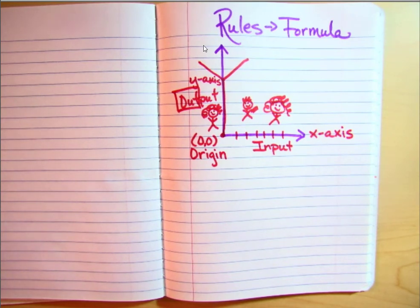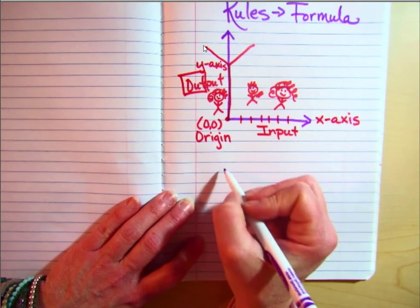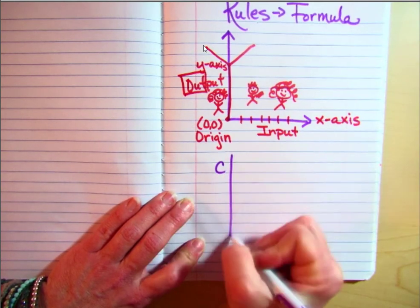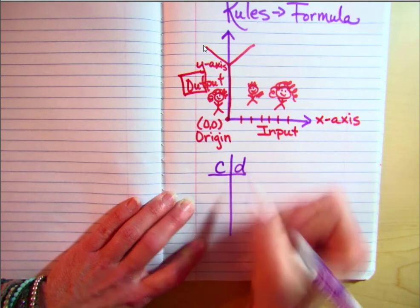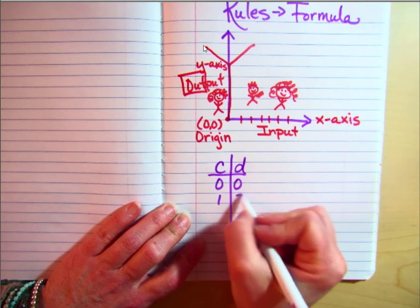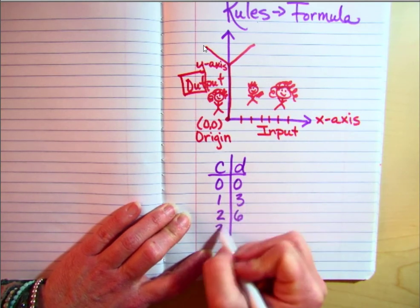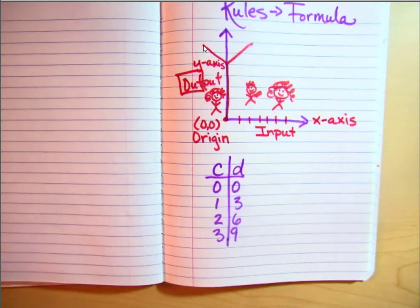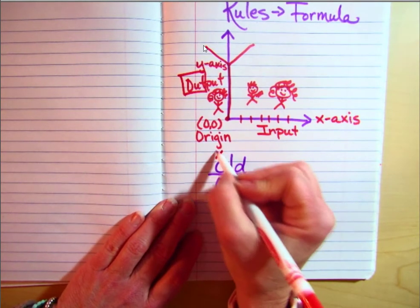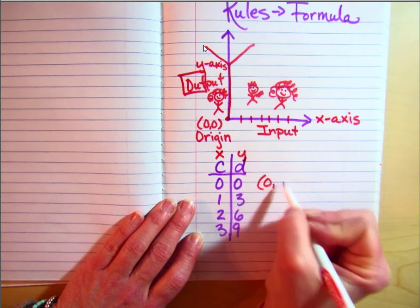Sometimes you're going to get a graph that's going to give you the points. Let's say we have one like this. It says C and D and it has these points here. When I'm evaluating these input-output tables, sometimes they change up the letters, but this is always x and this is always y. If I'm writing coordinates, this is 0, 0, this is 1, 3, this is 2, 6, this is 3, 9.